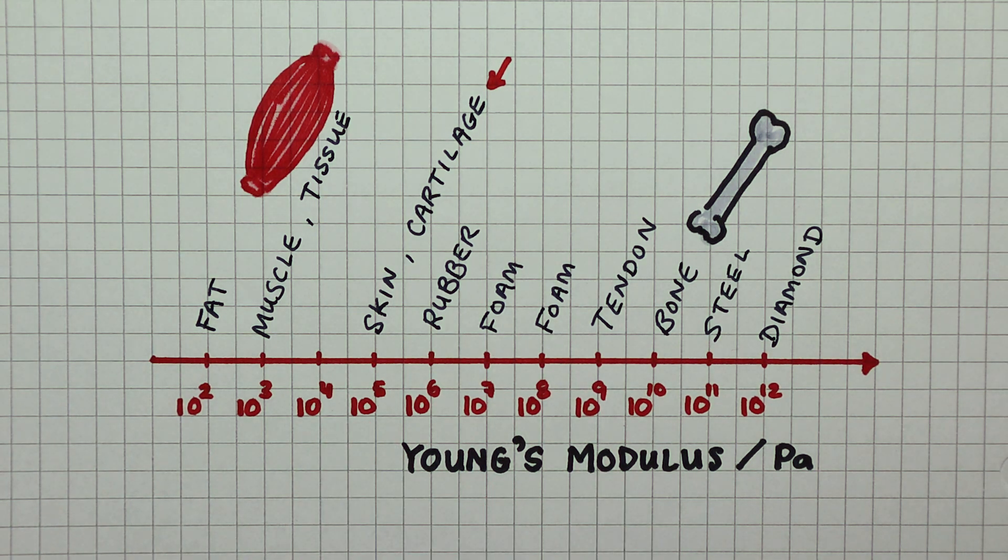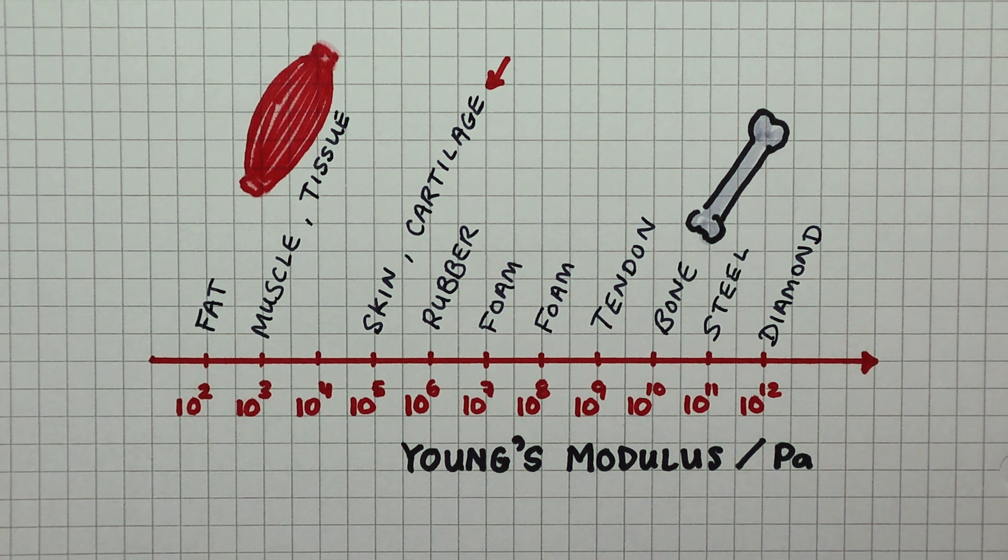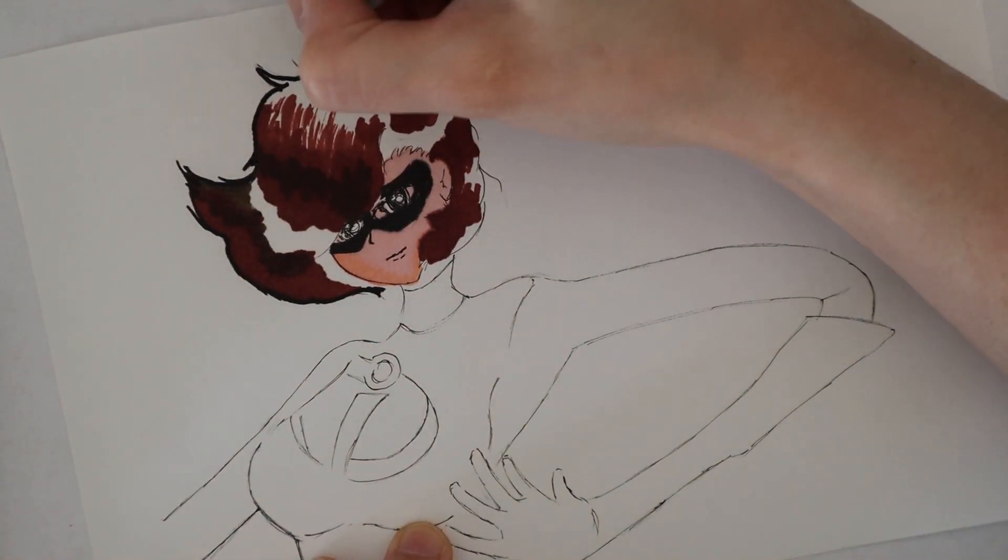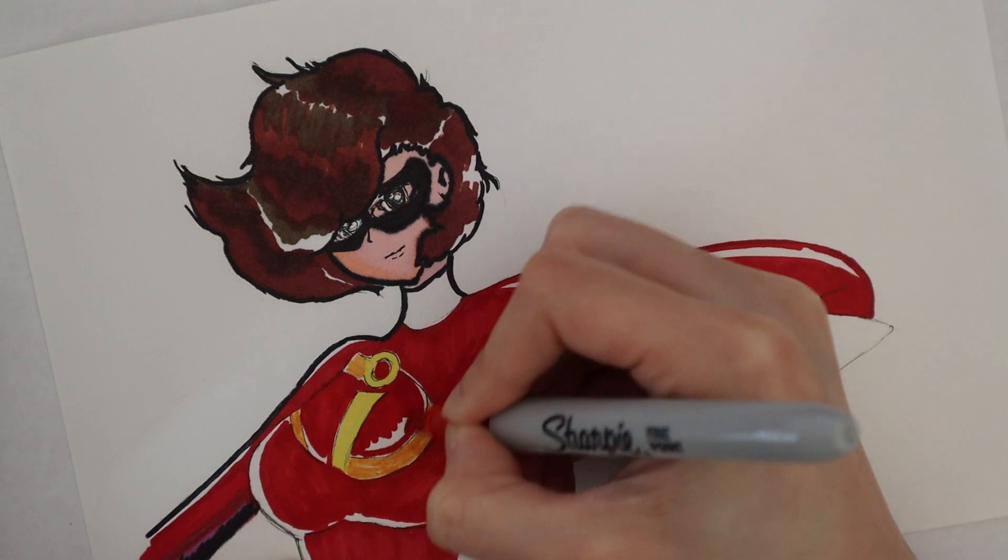Not quite rubber, which was one of the materials that I thought she might be made of. So if anybody out there is purely made of skins and cartilage without any bones or tendons, you are the next Elastigirl.